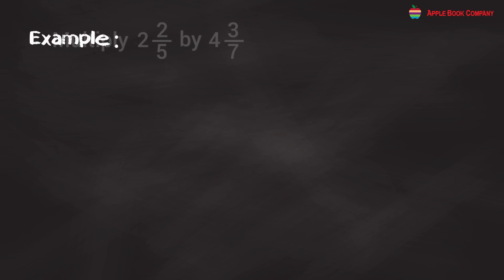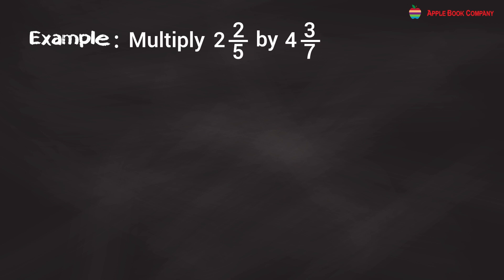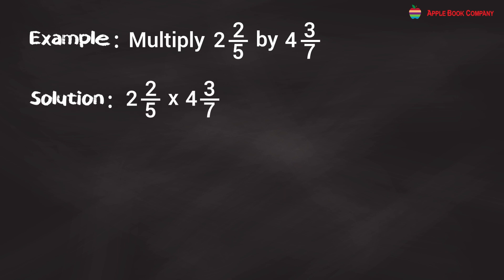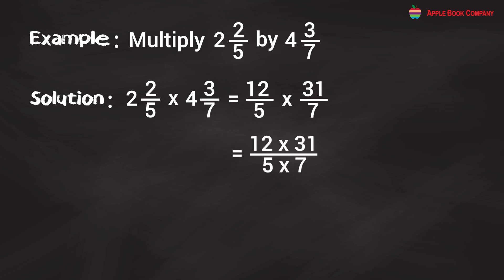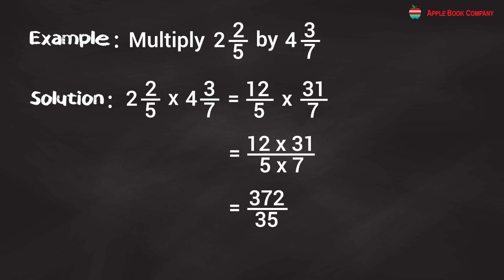Example: Multiply 2 and 2/5 by 4 and 3/7. Solution: 2 and 2/5 × 4 and 3/7 = 12/5 × 31/7 = (12 × 31)/(5 × 7) = 372/35, which can also be written as 10 and 22/35.